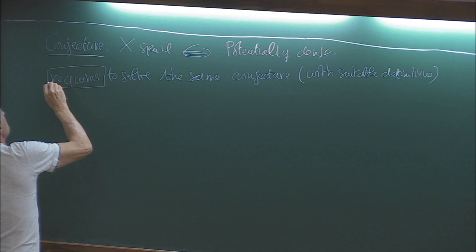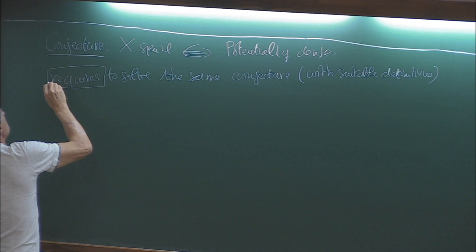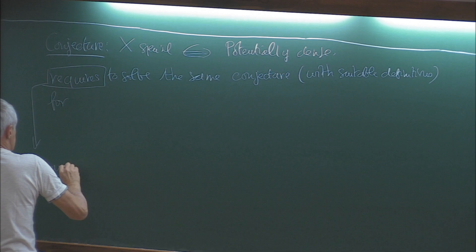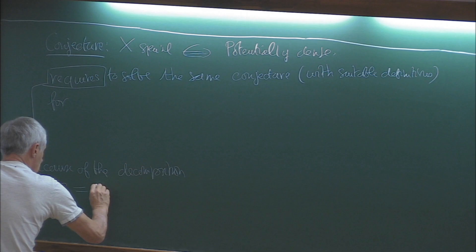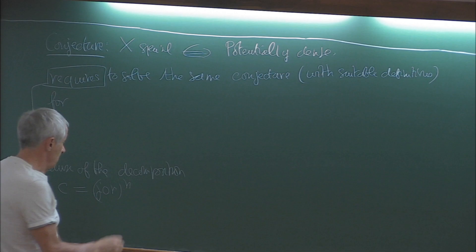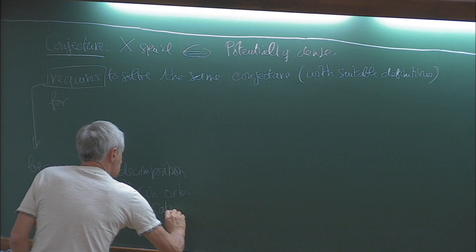This is because of the decomposition of a core map C, which is equal to J or N. This is in the orbifold category, the orbifold category.